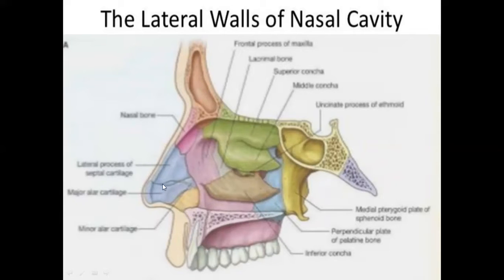The cartilaginous part is formed by the superior and inferior nasal cartilages and the alar cartilages. The cuticular part is formed by fibro-fatty tissue covered by skin. This completes the formation of the lateral wall.